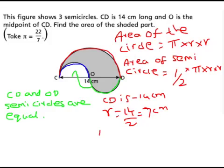Half times 22 by 7 times 7 times 7. So if you work it out, the answer will be 77.